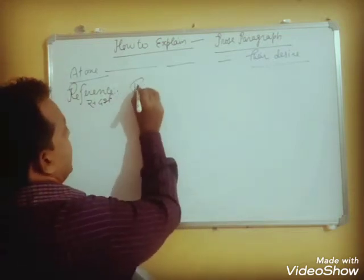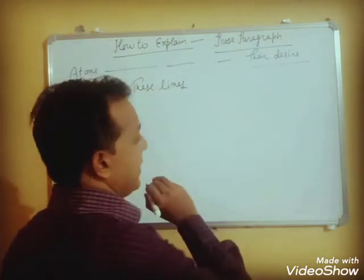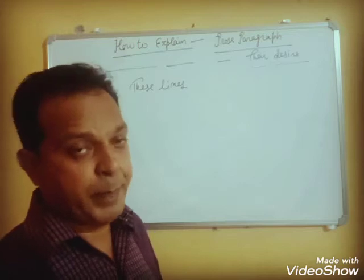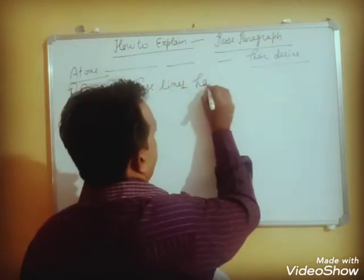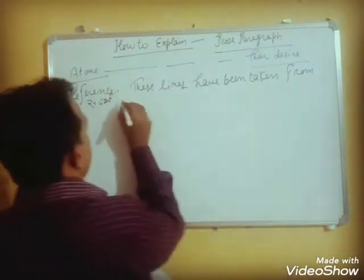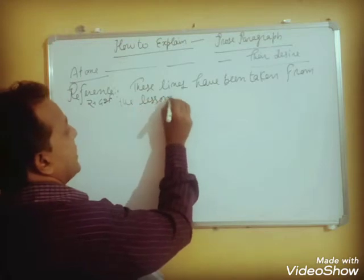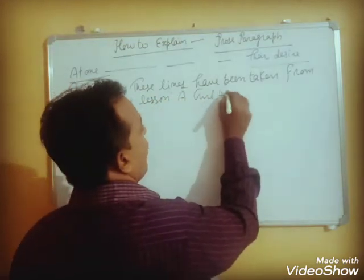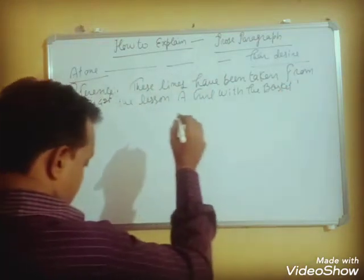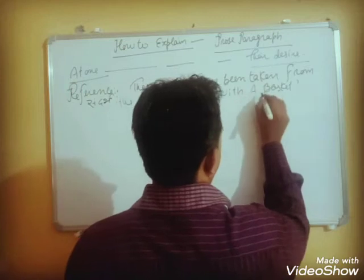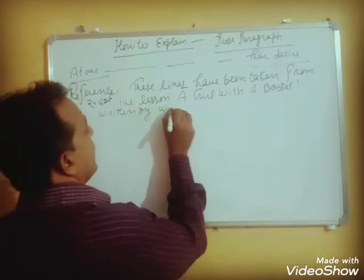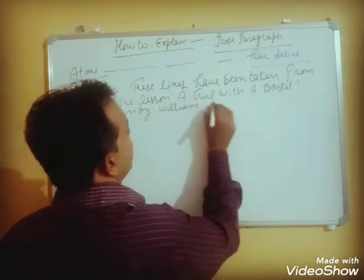In the Reference section, we write: when explaining a prose section, we write 'these lines'; when doing a poetry stanza, we write 'this stanza.' So: 'These lines have been taken from the lesson A Girl with the Basket, written by William C. Douglas.' For poetry, we would write 'composed by' instead of 'written by' — we will explain that in the poetry section.